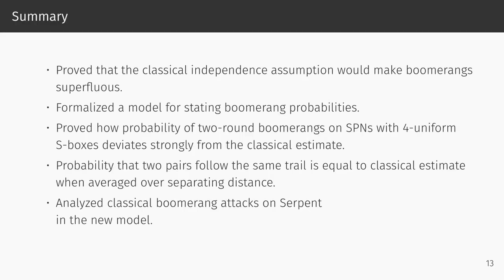To summarize: we showed that a strange result of the classical independence assumption is that it would make boomerangs superfluous. We formalized a model for stating boomerang probabilities that works analogous to how standard differential probabilities are determined. We used this model to prove how two-round boomerangs on SPNs with four uniform S-boxes deviate strongly from the classical estimate. And we showed that the classical estimate is adhered to on average by a pair of texts when averaged over the separating distance. Finally, we re-evaluated the probabilities of some classical boomerang attacks using our model. Thank you for listening.